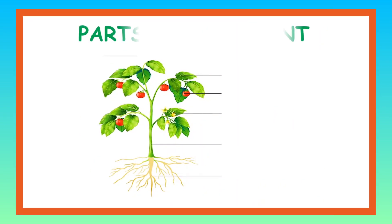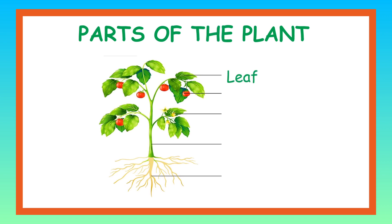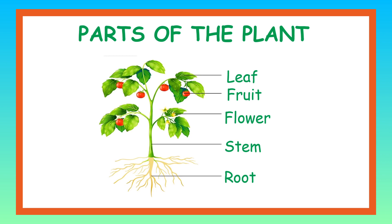Plants have five main parts: leaf, fruit, flower, stem, and root. Leaf is a flat green part of a plant that helps it make food through a process called photosynthesis.